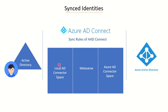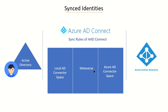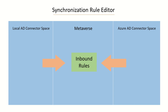The entire process of sync rules happens inside the database that AAD Connect uses as an application. If we talk about the architecture fundamentals, it has three logical subdivisions: the first is the Local AD Connector Space, the next is the Metaverse, and the last is the Azure AD Connector Space. Information related to any objects is updated from Local AD Connector Space to Metaverse, as well as from Azure AD Connector Space to Metaverse and vice versa. When information is sent from a connector space to Metaverse, inbound rules are applied; when information is sent from Metaverse to the connector spaces, outbound rules are applied.